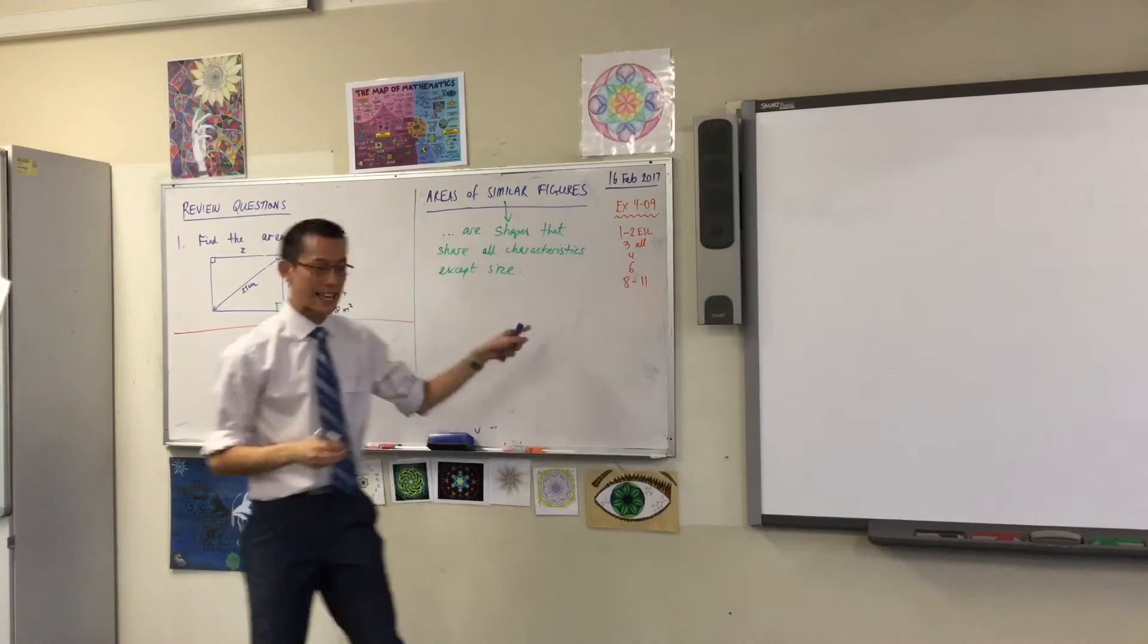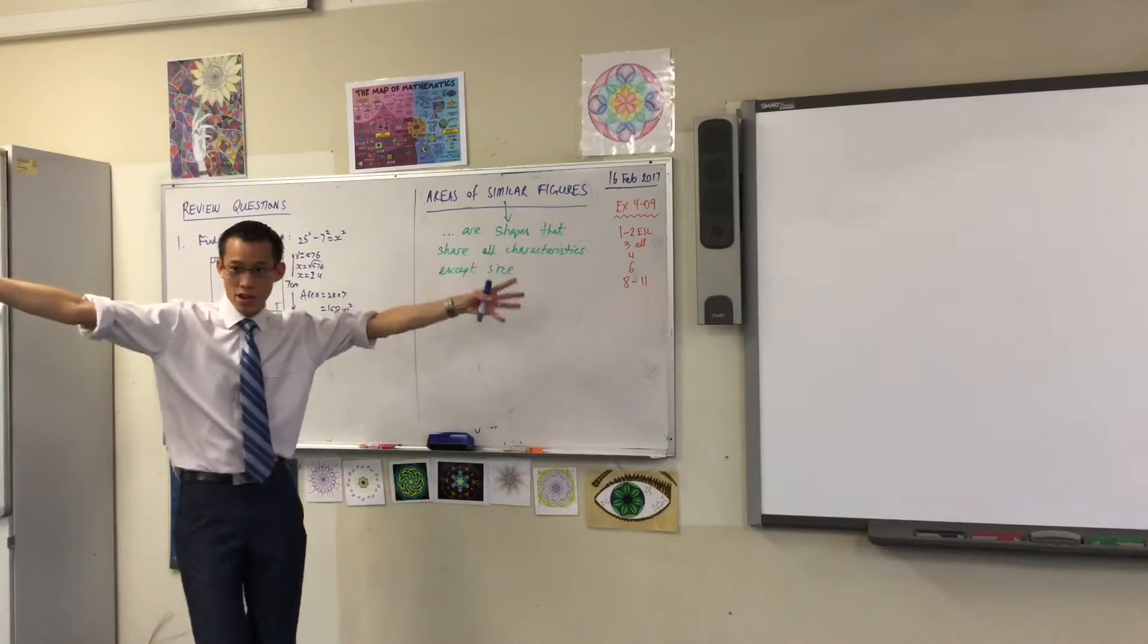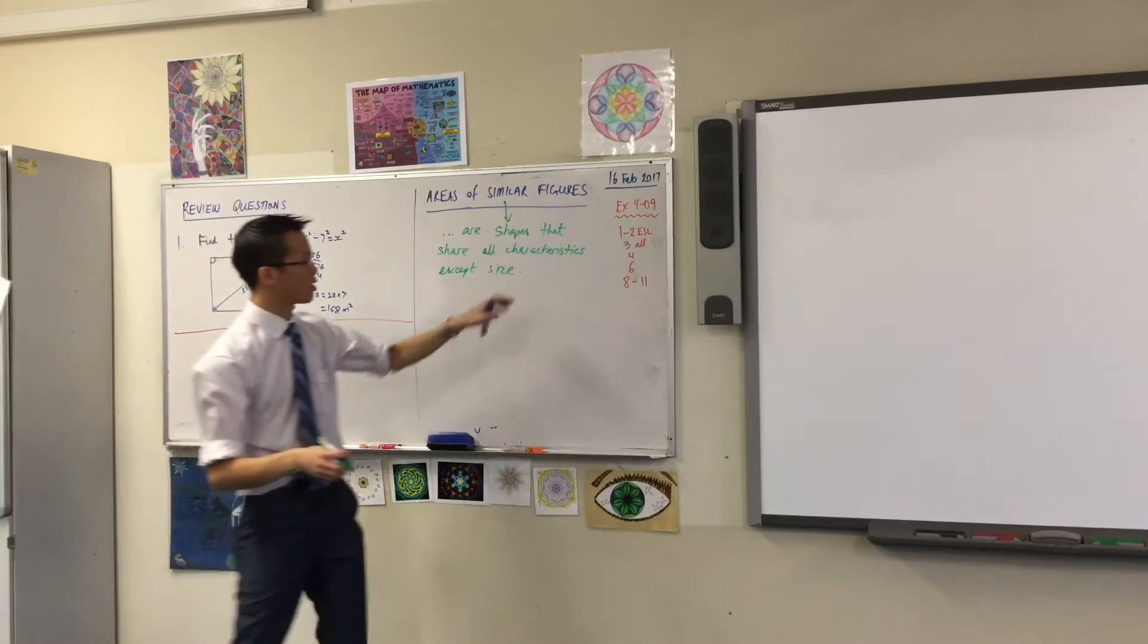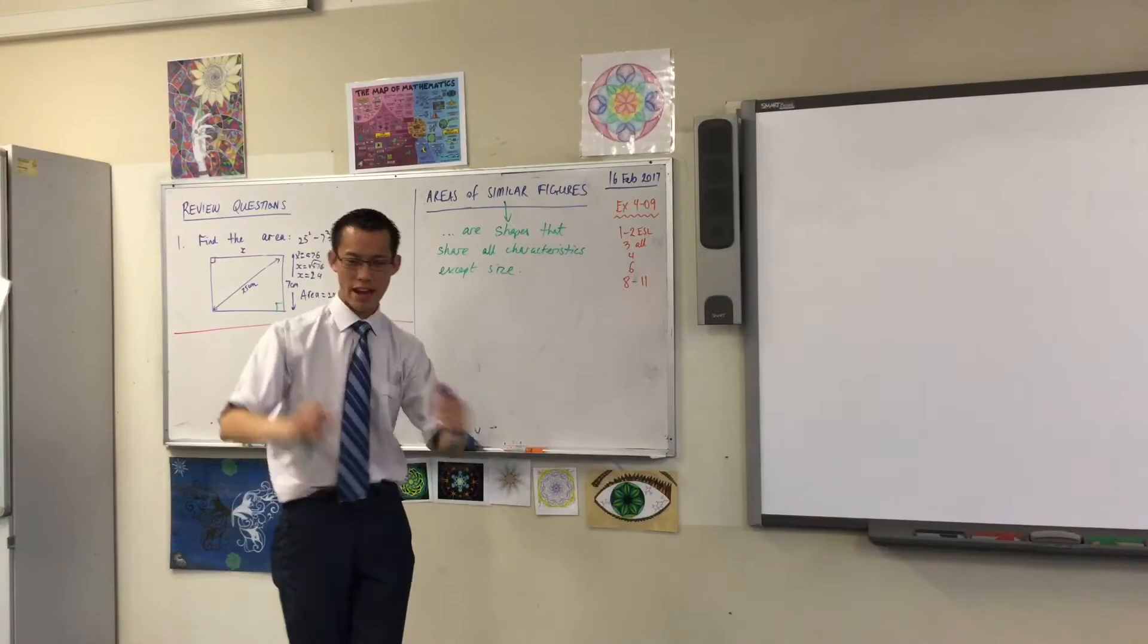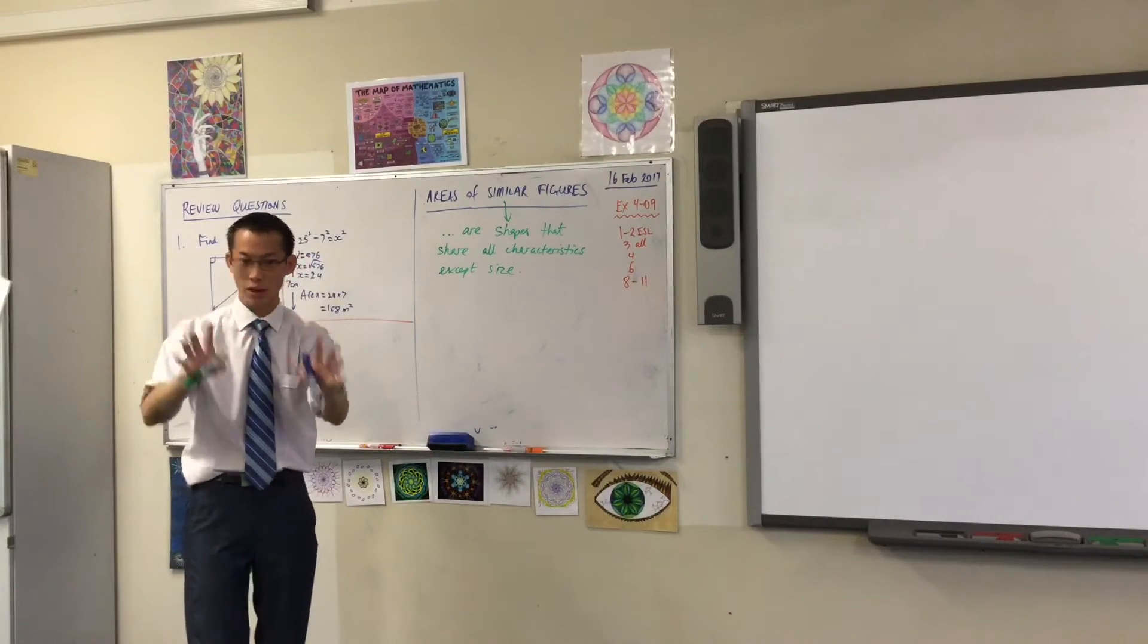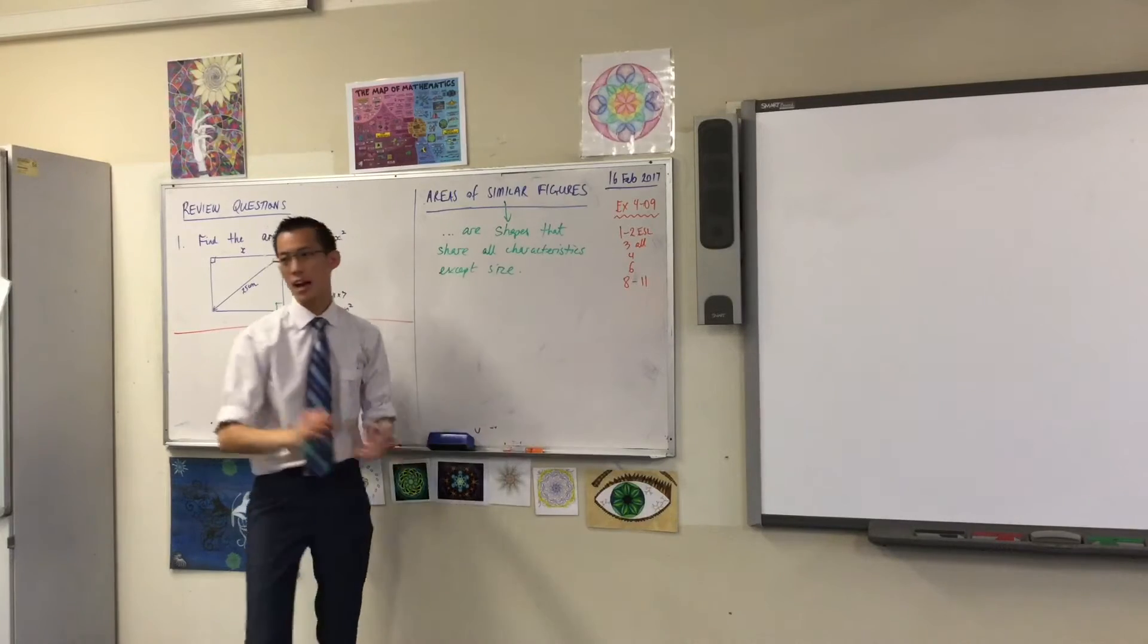Now what that gets at is what Danielle was saying, which is that you can take a shape, you can make it really, really big or really, really tiny, but so long as the characteristics are the same, the square's still a square, the triangle's still pointing in the same direction, whatever, so long as it's sharing those, it'll be similar. You can change the size, make it whatever you like.